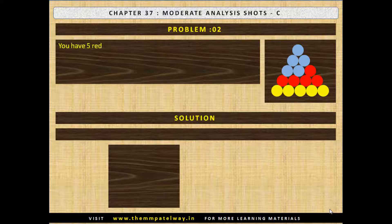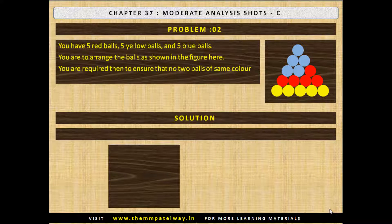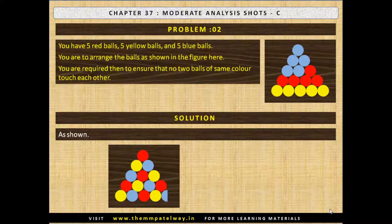Problem No. 2. You have 5 red balls, 5 yellow balls and 5 blue balls. You have to arrange the balls as shown in the figure, ensuring that no two balls of the same color touch each other. Now stop the video and solve the puzzle. The solution arrangement is shown.